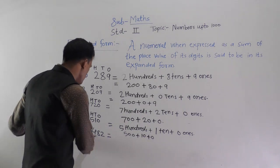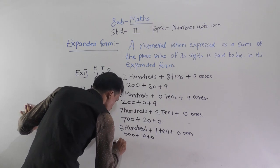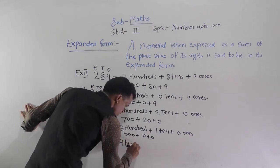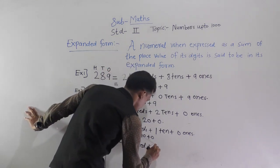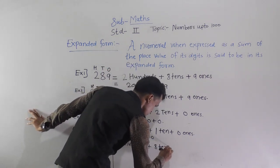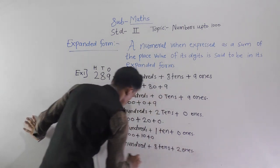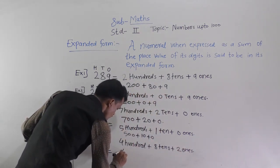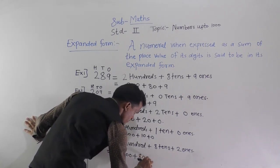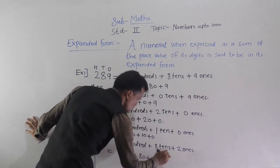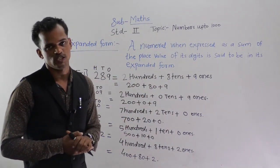Next example: 482. Here 4 comes at the hundreds place. So: 400 plus 8 tens plus 2 ones. Write this in numerals: 400 plus 80 plus 2. This is the expanded form of this three-digit number.